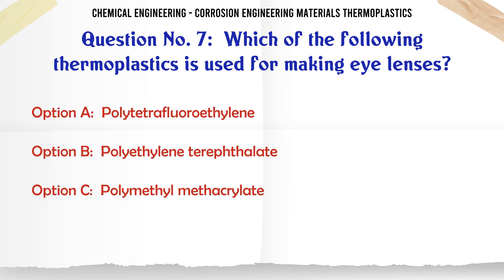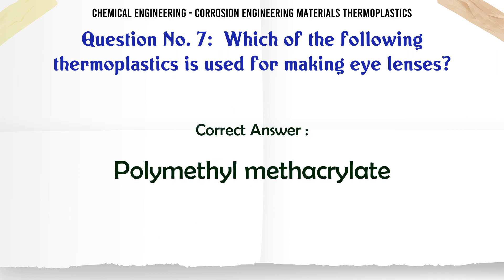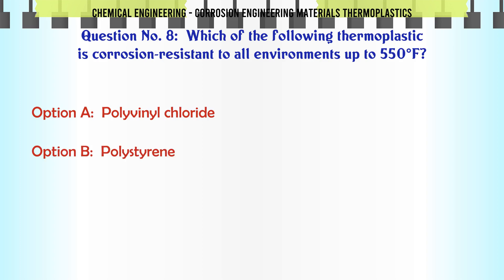Which of the following thermoplastics is used for making eye lenses? A. Polytetrafluoroethylene, B. Polyethylene terephthalate, C. Polymethyl methacrylate, D. Polyvinyl chloride. The correct answer is polymethyl methacrylate.